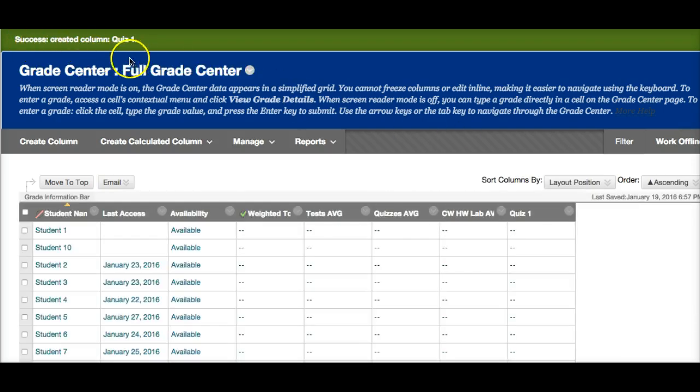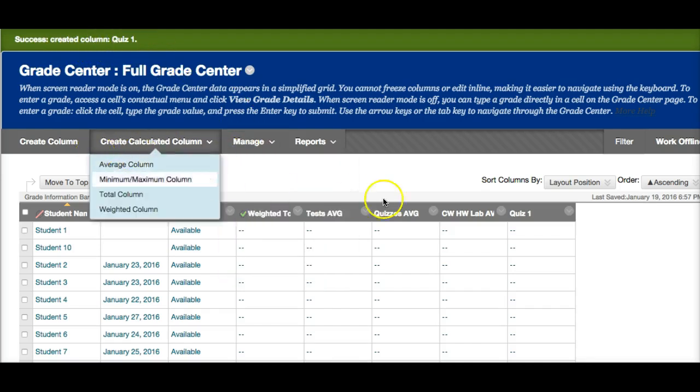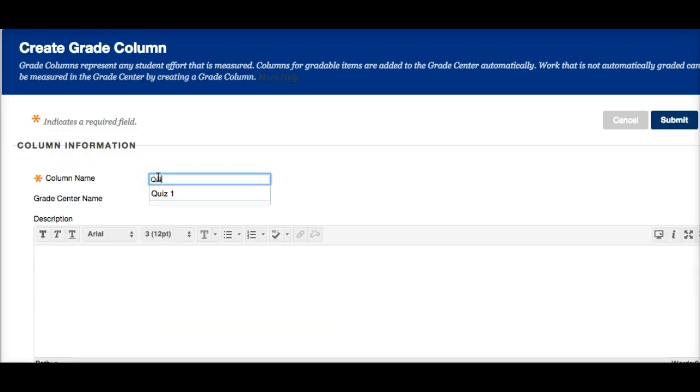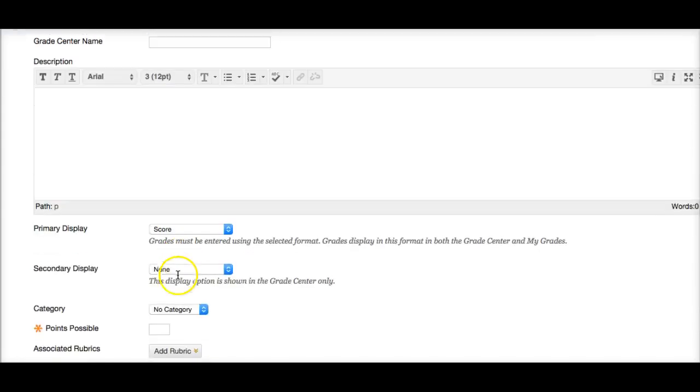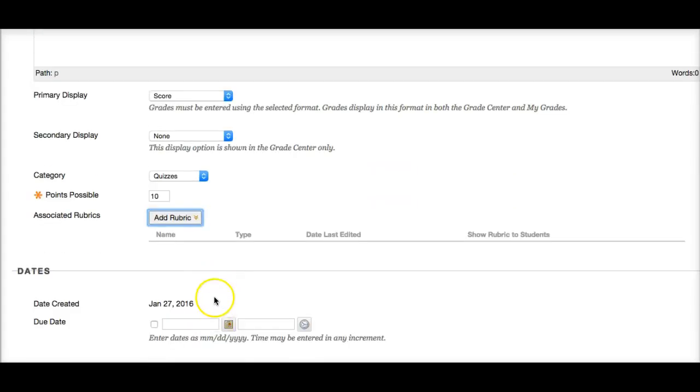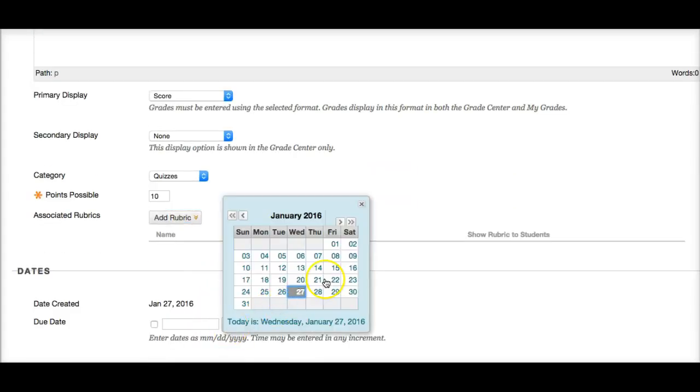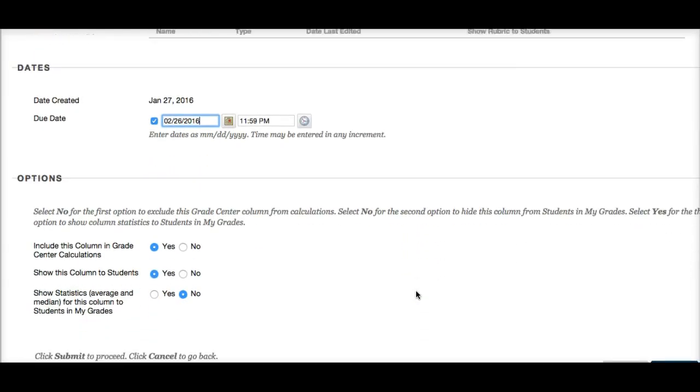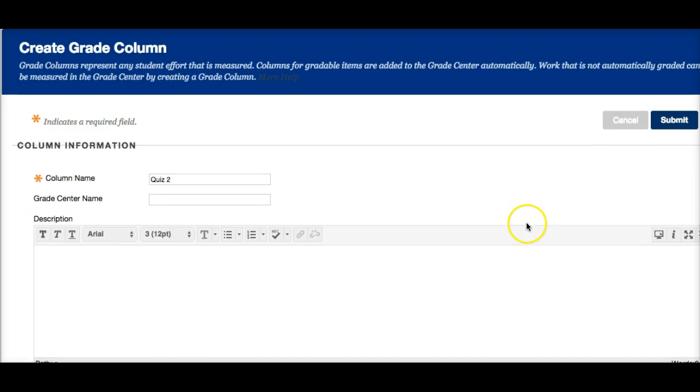You can see every time you create something, it says success created column quiz 1. So you can always verify that you did create it. Here it is. Quiz 1. So I can go ahead and set up all of my quizzes. Quiz 2. Score. Category: quizzes. Worth 10. My second quiz is February 26th. If you think it looks good, I'm going to click on submit.